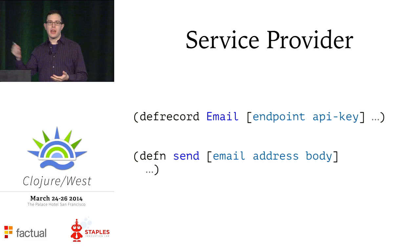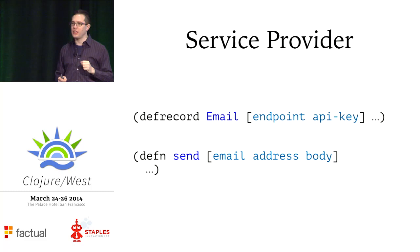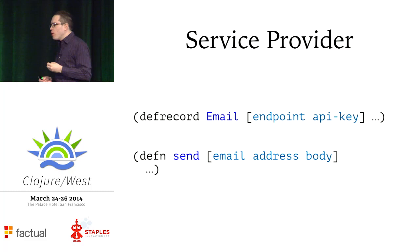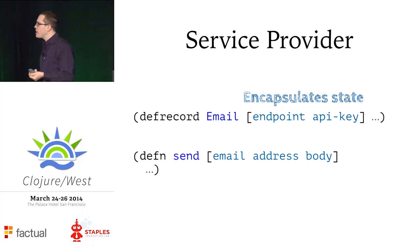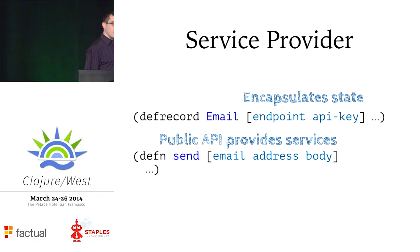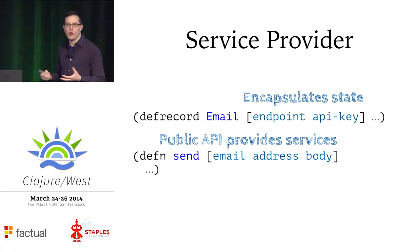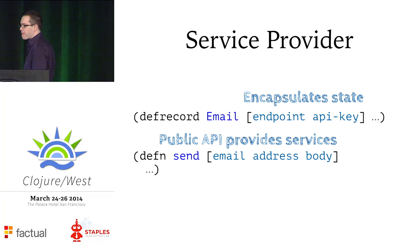The next type of component is one that simply provides a service to other components. Let's say my application needs to send email — because every application needs to send email — and I'm using some email API service that requires two bits of configuration: an endpoint URL and an API key. I can put those two things together into a record called email and write a public API function that takes the email component as its argument and provides the service. Anyone who wants to send email needs an instance of this record, but they don't need to know anything about the endpoint or API key — they don't need to know the mechanics of how sending email works.